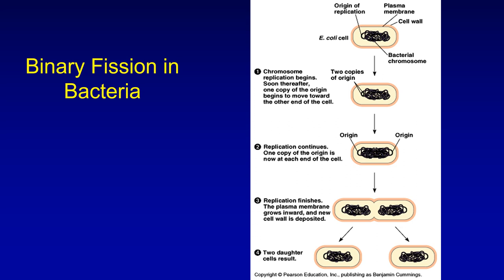Sex does not occur in all organisms. It occurs in most eukaryotes, although some of them have given up on it, but it does not occur in bacteria and archaea. Bacteria have one giant circle of DNA which is the chromosome, and they might have a few smaller circles of DNA known as plasmids. But they do not engage in meiosis, and they don't have anything that could be referred to as sex.